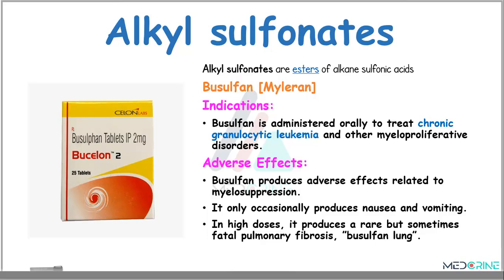Then we have alkyl sulfonates. An example is busulfan. Alkyl sulfonates are esters of alkane sulfonic acids. Busulfan is used orally to treat chronic granulocytic leukemia and other myeloproliferative disorders. Important side effects include myeloid suppression and occasional nausea and vomiting. In high doses, it produces a rare but serious pulmonary fibrosis known as busulfan lung.